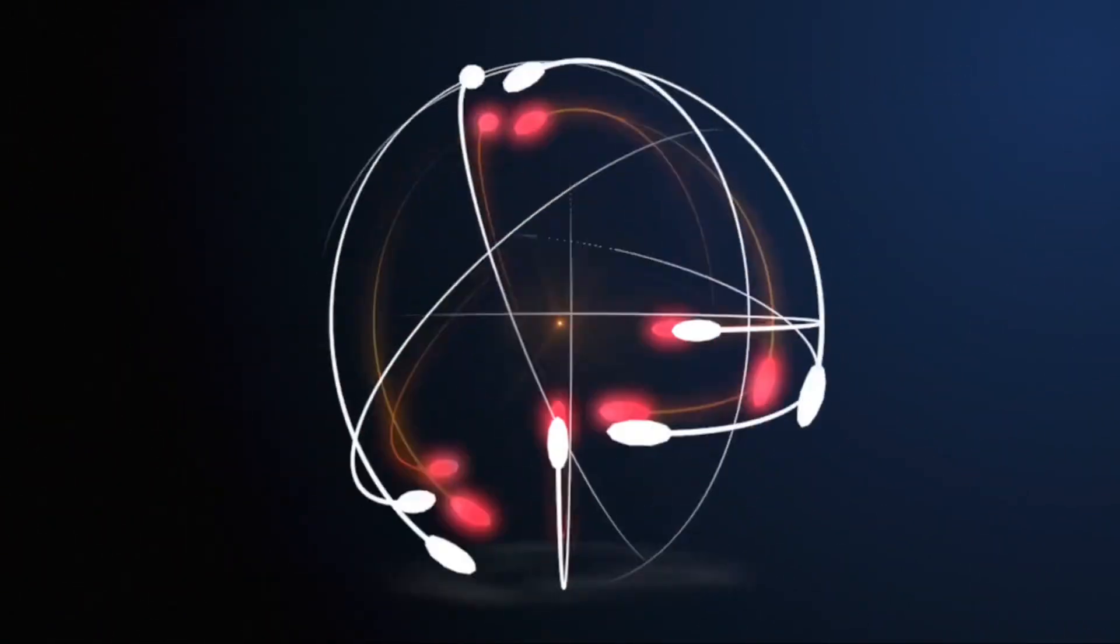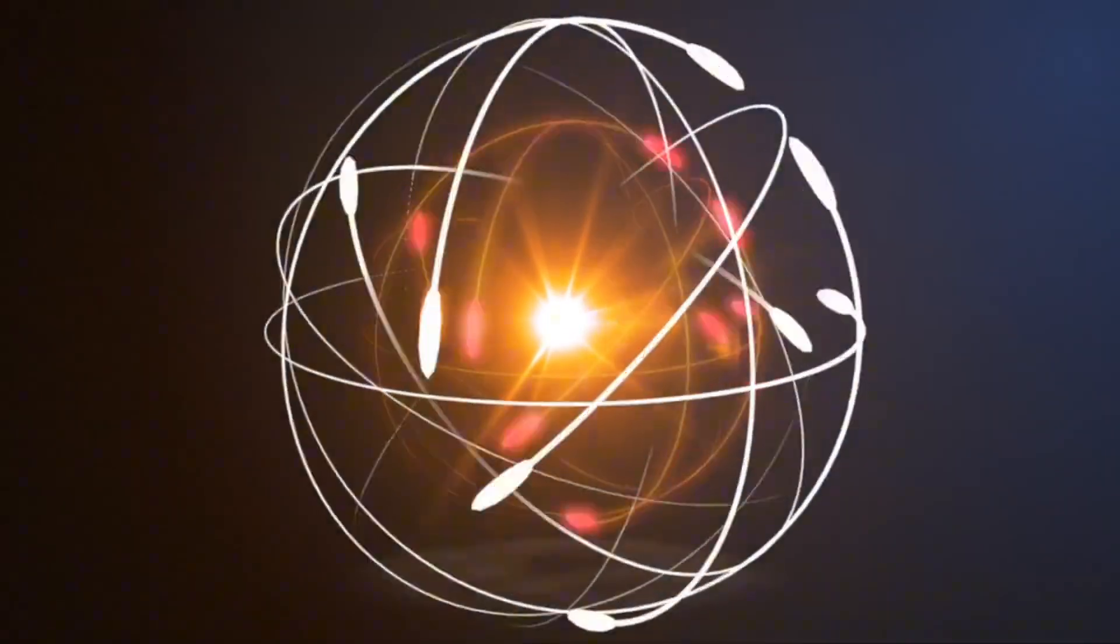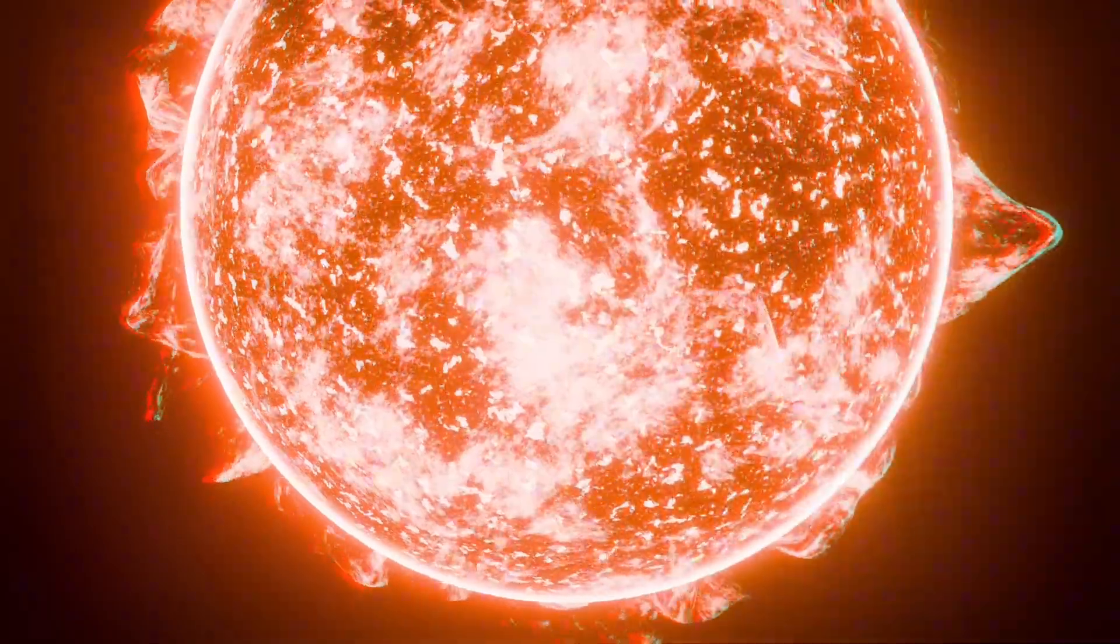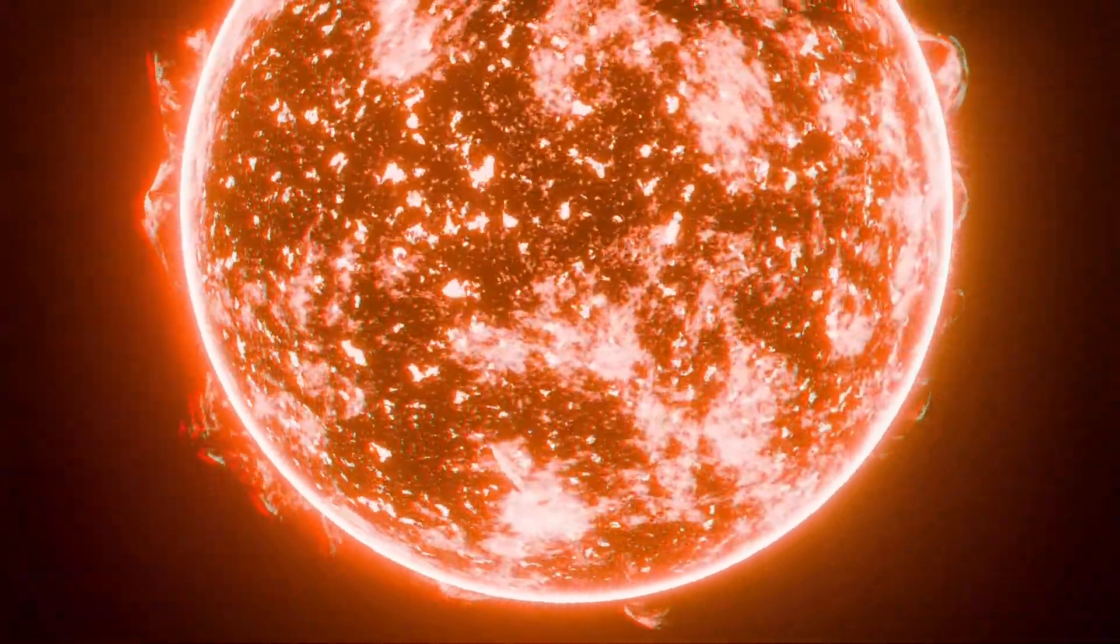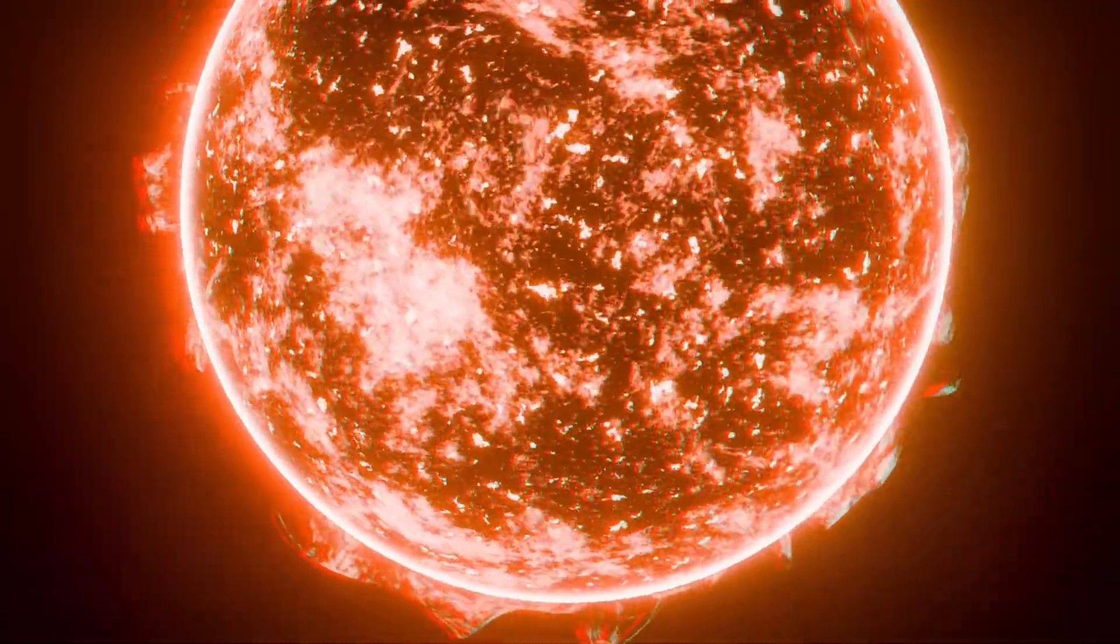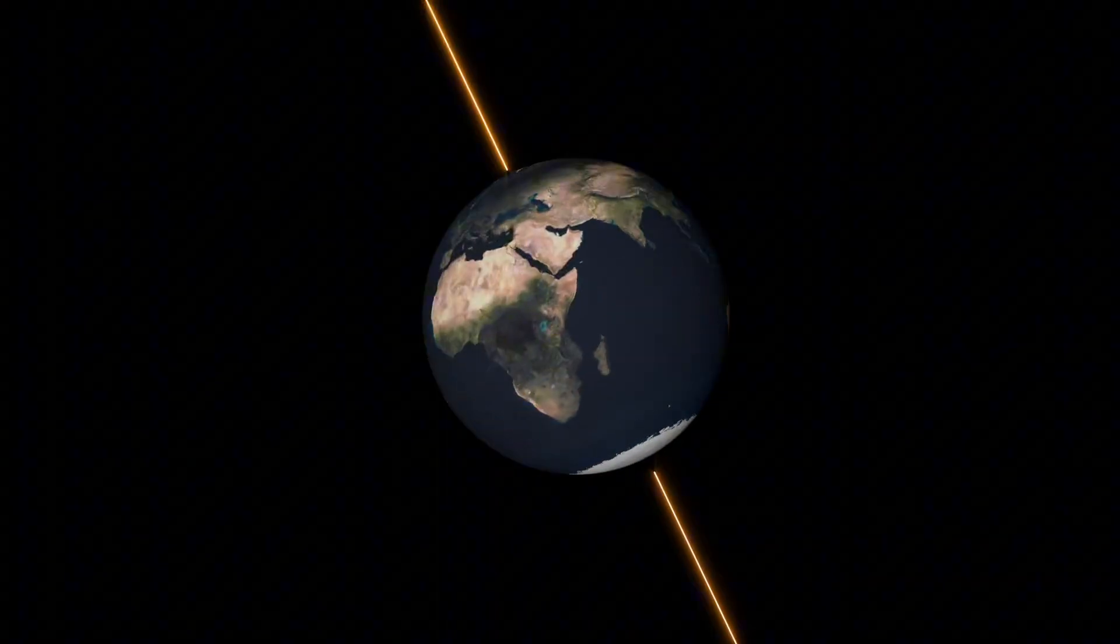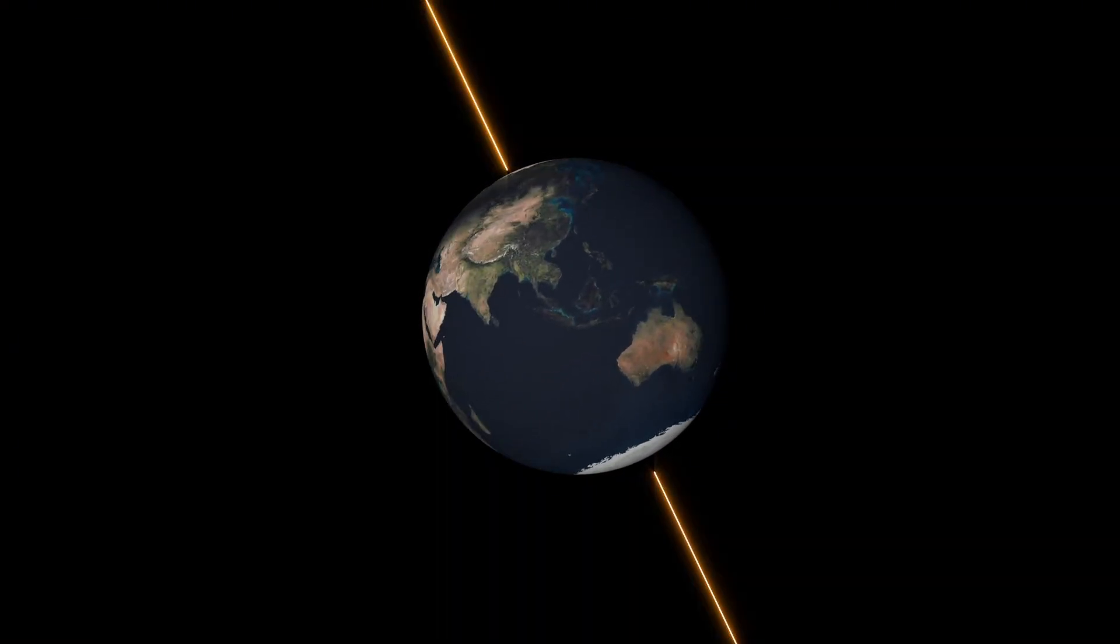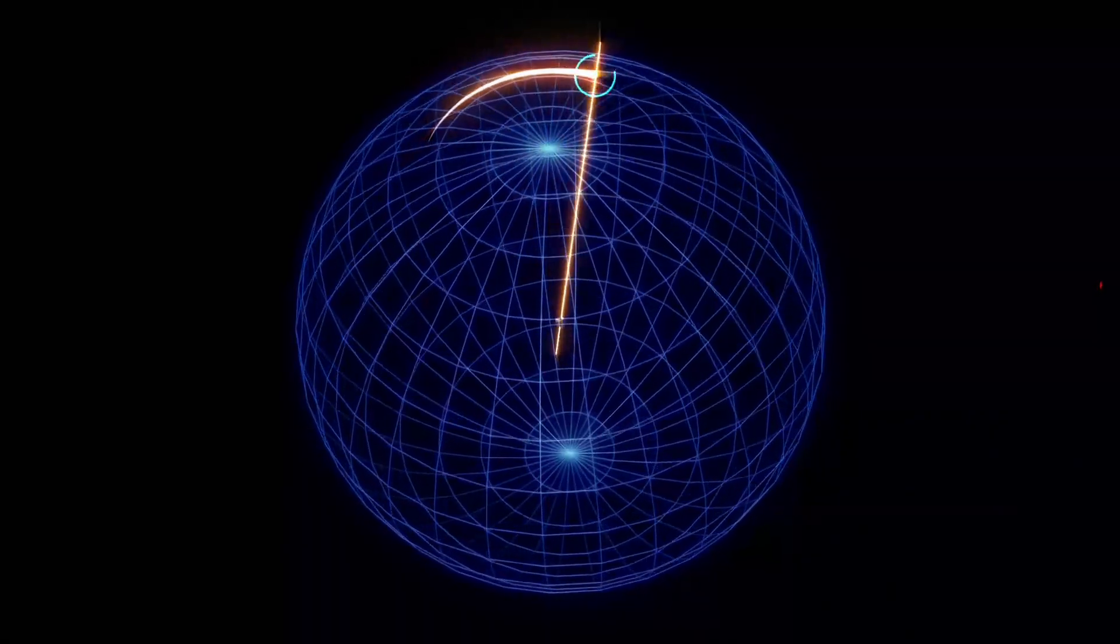NOAA forecasters have identified something else. Towering prominences, massive arches of plasma rising from the Sun's north pole. These structures are visible in the 304 angstrom wavelength, revealing activity on the Sun's far side, activity we can't see directly yet. And that far side activity has a history, a history that could repeat itself in the next 48 hours.